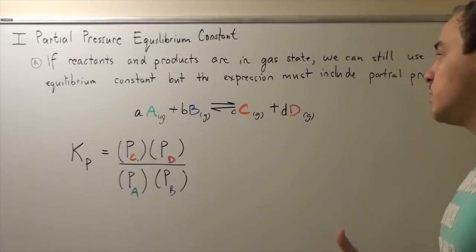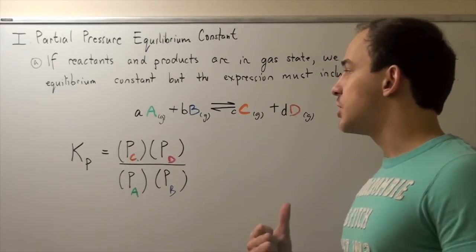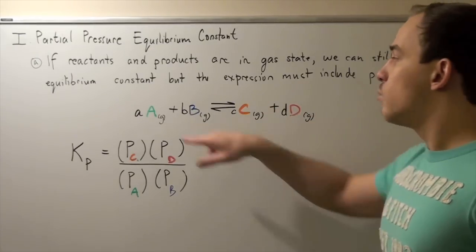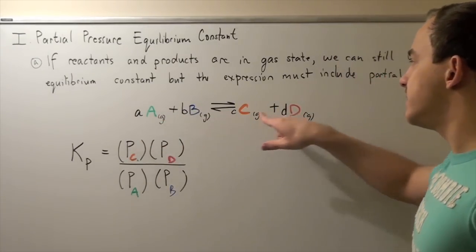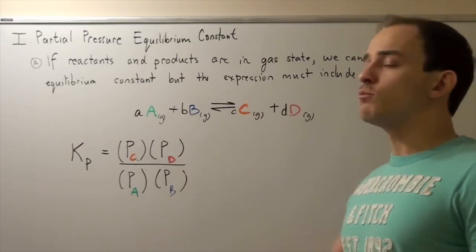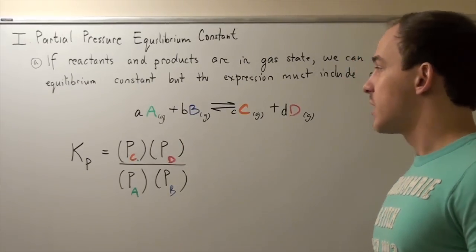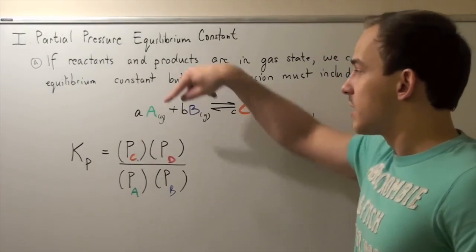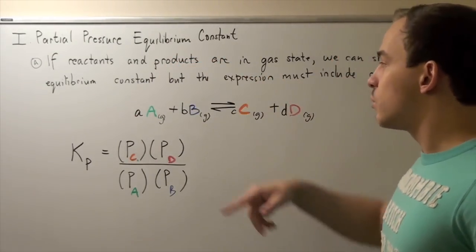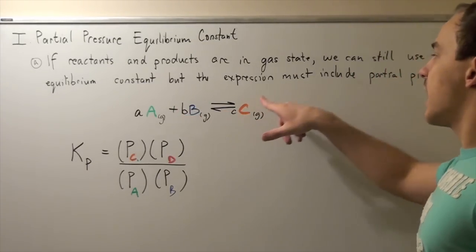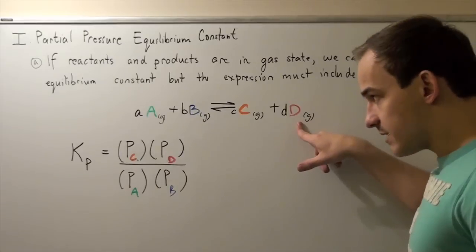For example, suppose we have the following reaction in which gas A reacts with gas B to produce gas C and gas D, where lowercase a, b, c, and d are the coefficients of each respective atom that represent the moles of each atom. For example, lowercase a number of moles of A gas reacts with B number of moles of B gas produces C number of moles of C gas and D number of moles of D gas.